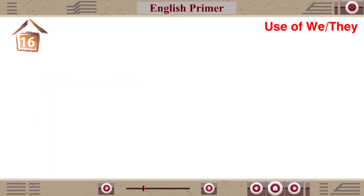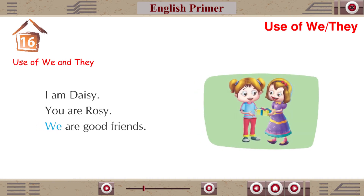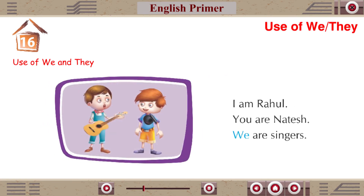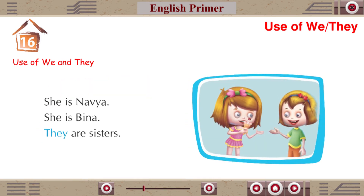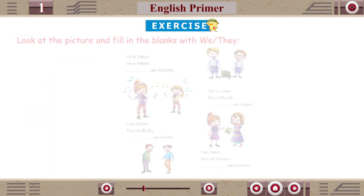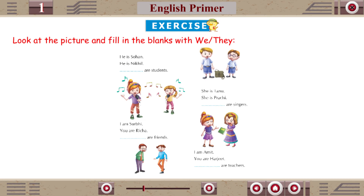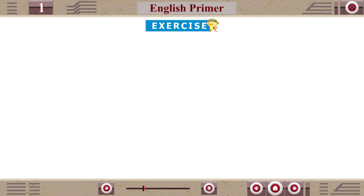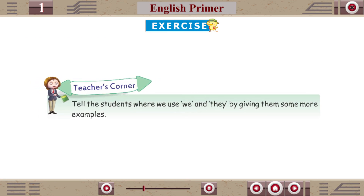Chapter 16: Use of We and They. I am Daisy. You are Rosie. We are good friends. I am Rahul. You are Natesh. We are singers. She is Navya. She is Bina. They are sisters. He is Rohit. He is John. They are neighbors. Exercise: Look at the picture and fill in the blanks with We and They. Teacher's Corner: Tell the students where we use We and They by giving them some more examples.